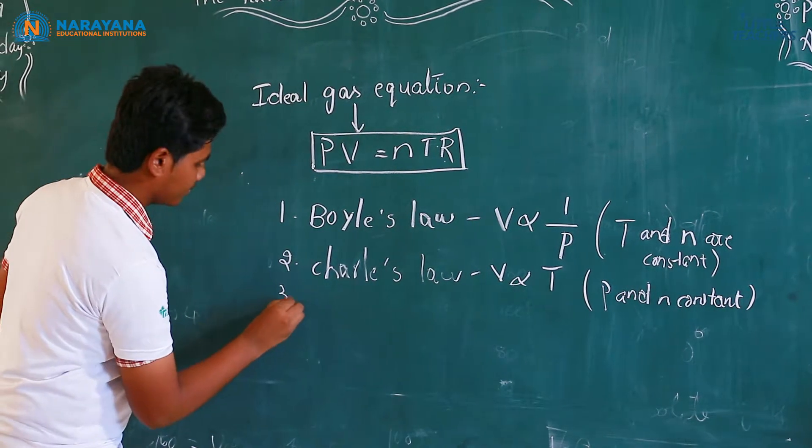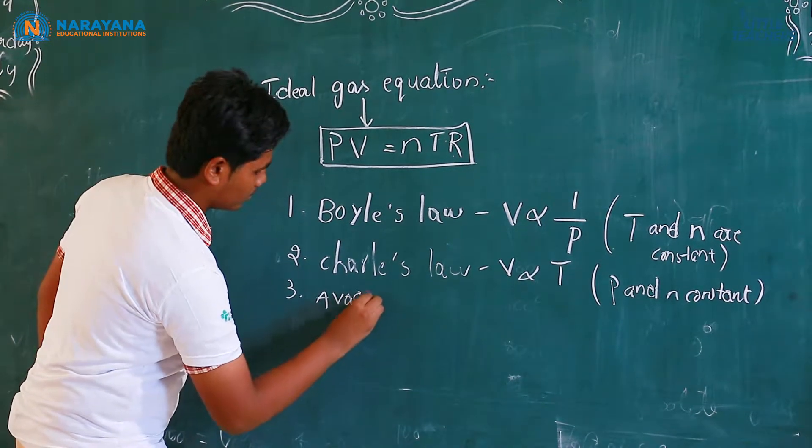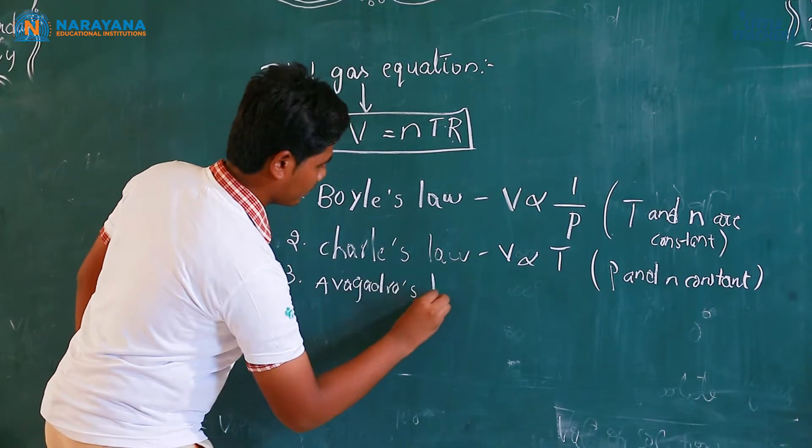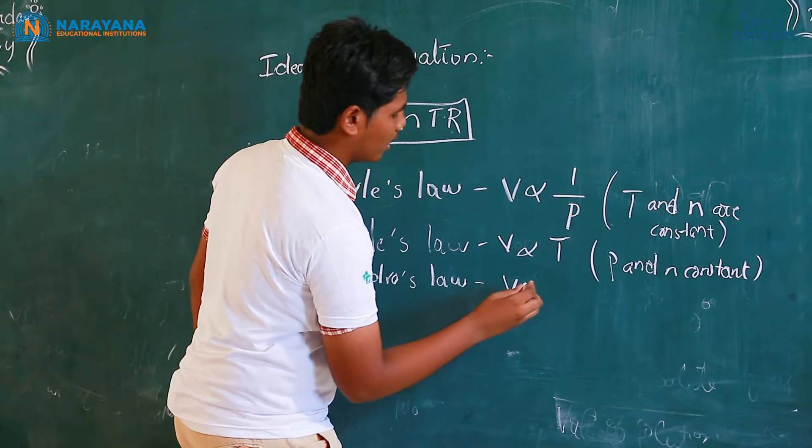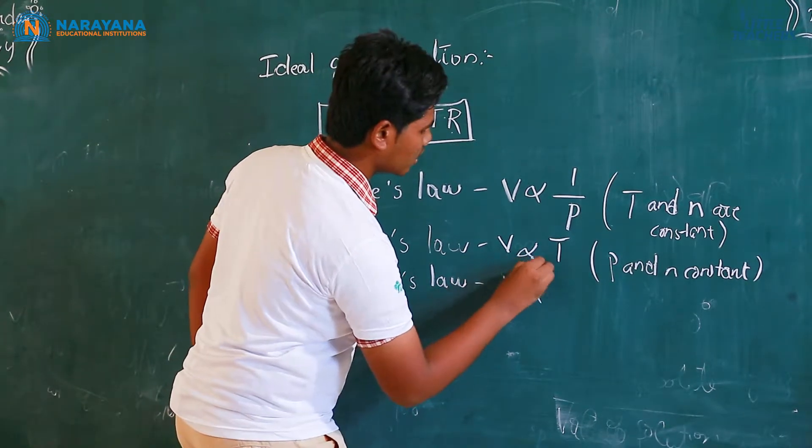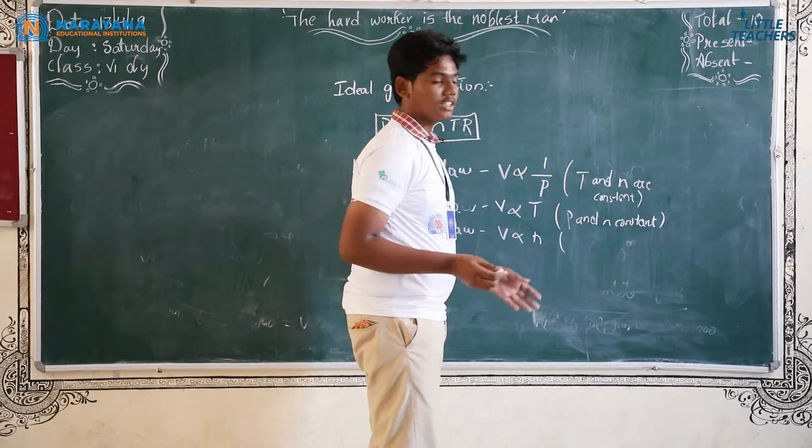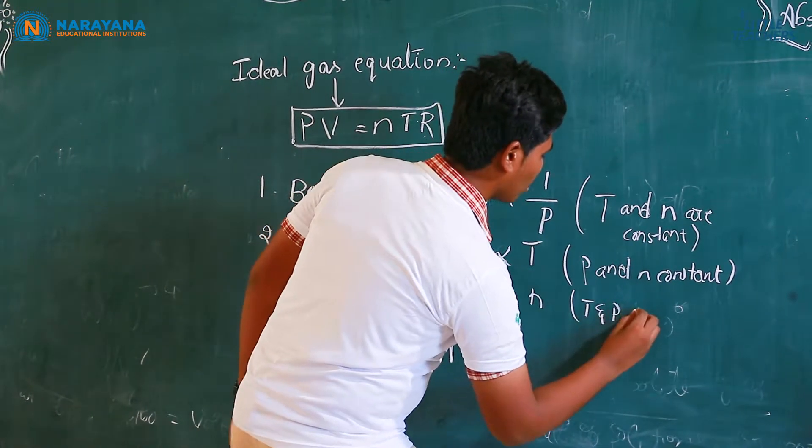Number three, Avogadro's law. This law states that volume of a gas is directly proportional to number of moles where both temperature and pressure becomes constant.